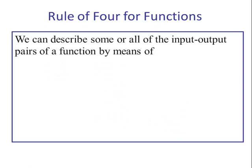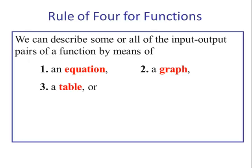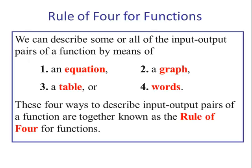The rule of four for functions: we can describe some or all of the input-output pairs of a function by means of number one, an equation; number two, a graph; number three, a table; or number four, in words. These four ways to describe the input-output pairs of a function are together known as the rule of four for functions.